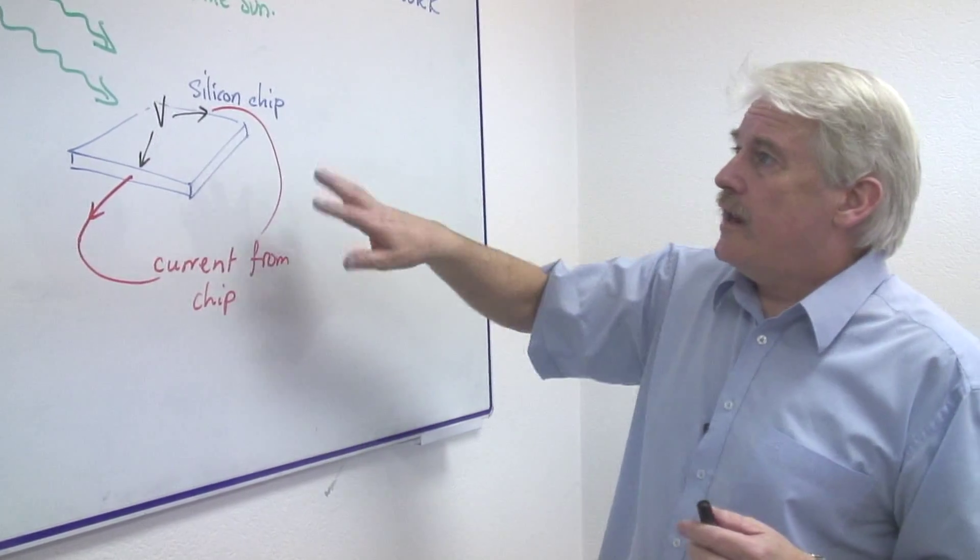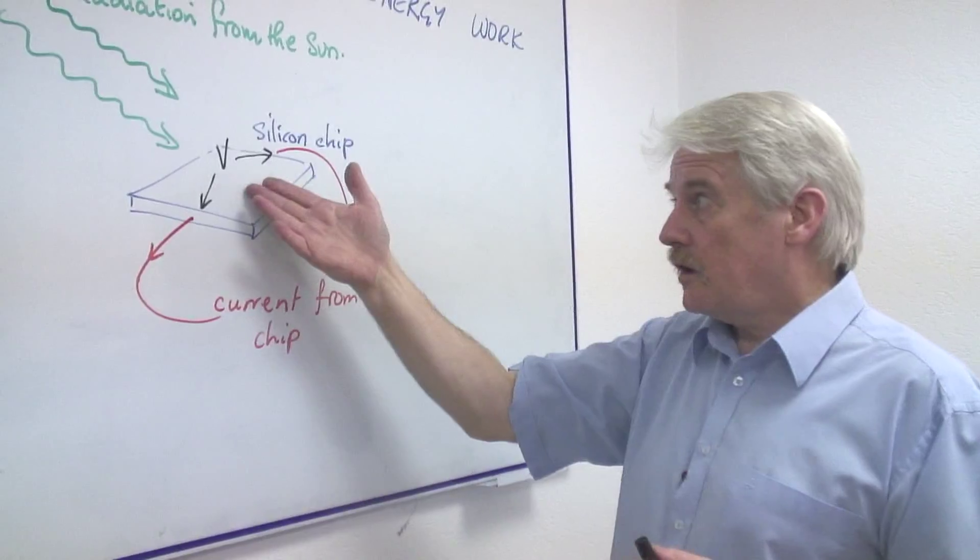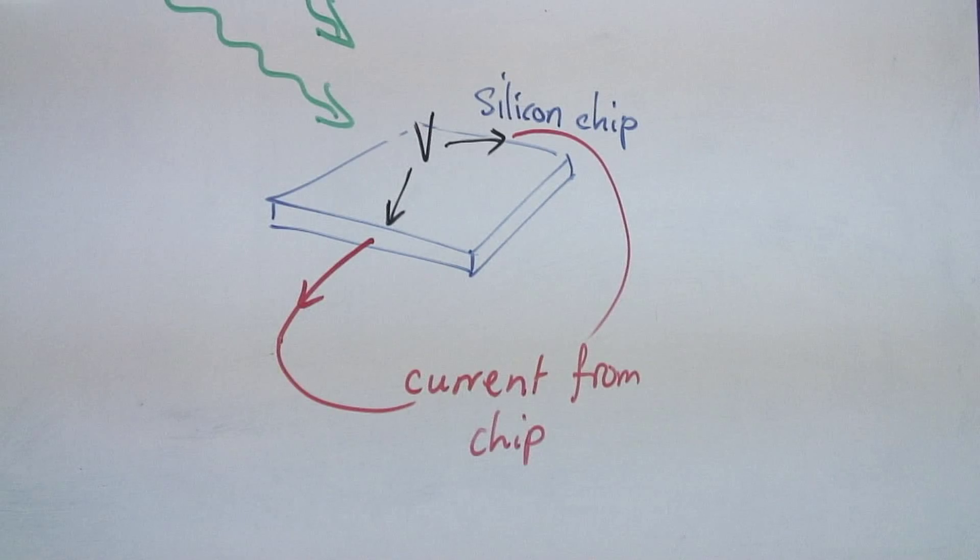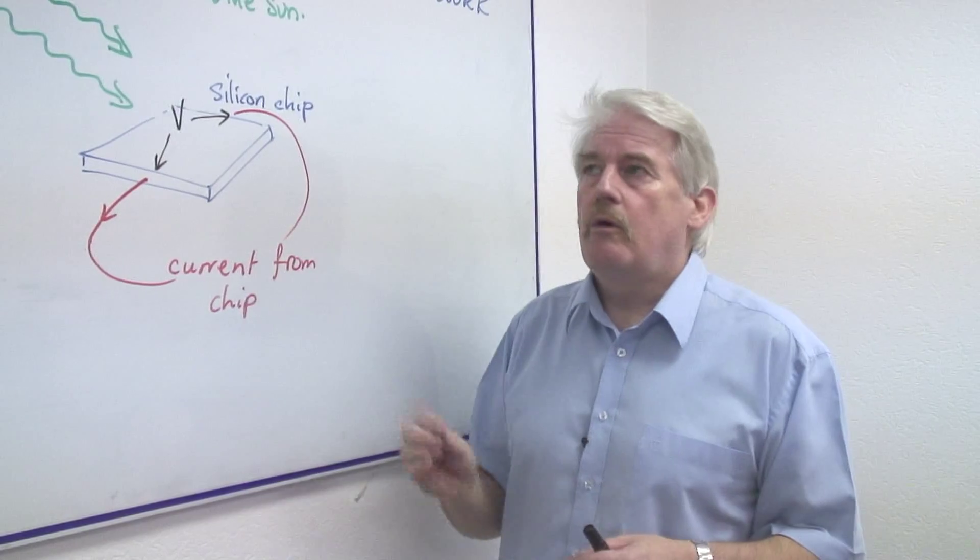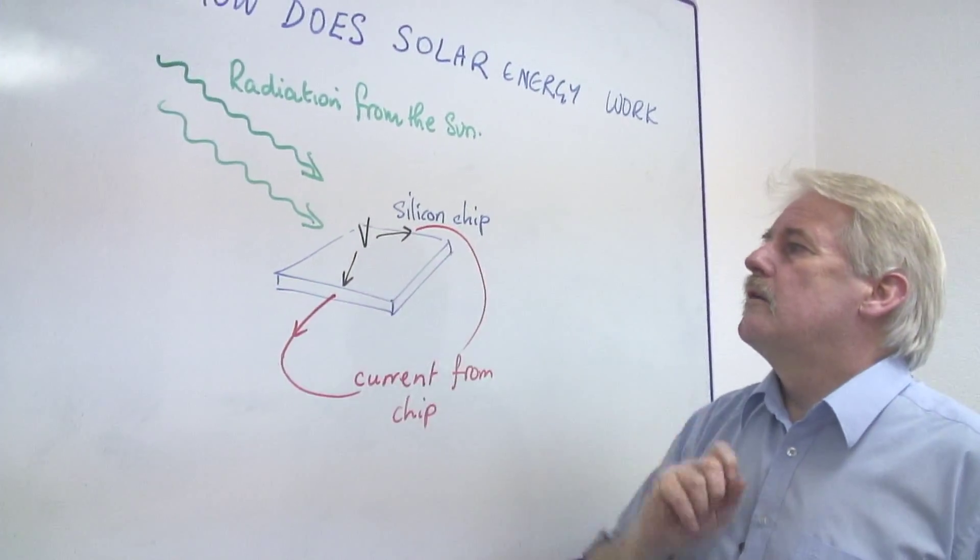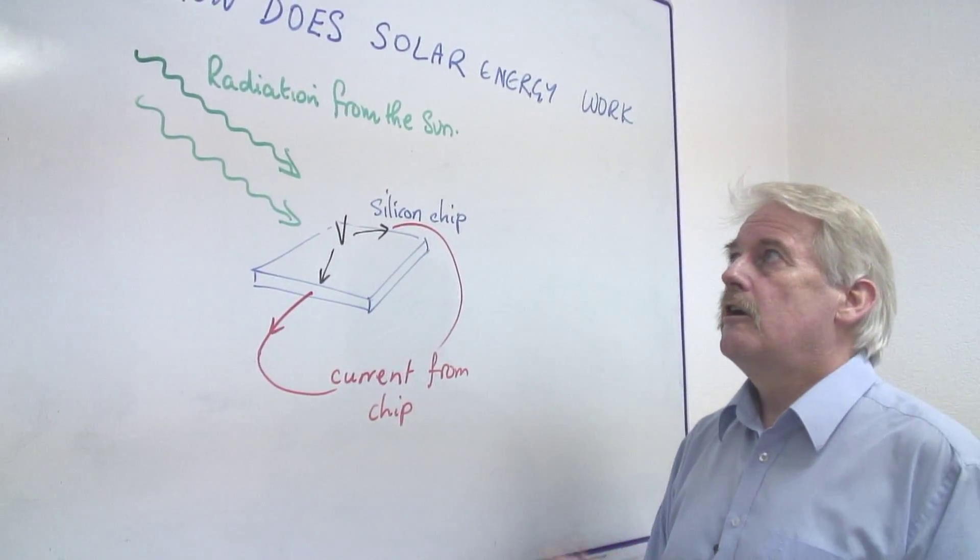So solar energy, which is free of course, is available providing we can produce the silicon chips. The silicon chips are very expensive to produce. So although this energy is free, the solar panels which are made to harness that energy are expensive.